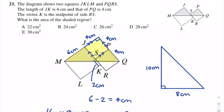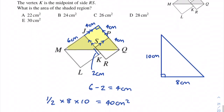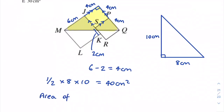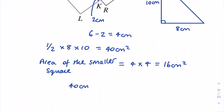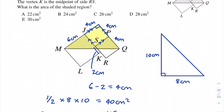To find the shaded region, we take the area of the right-angle triangle and subtract the area of the smaller square we created with the parallel sides. The smaller square has area 4 × 4 equals 16 cm². Therefore the shaded area is 40 minus 16 equals 24 cm², which is answer B.